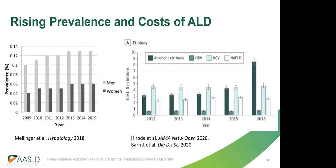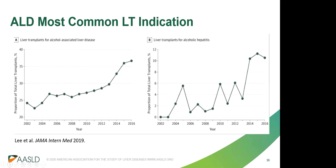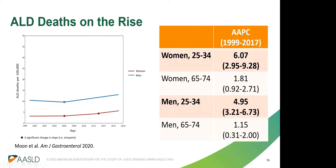National data from UNOS demonstrate a nearly 50% increase in liver transplantation for alcohol-associated liver disease since 2002, with much of this rise due to an increase in transplants for alcohol-related hepatitis. Recent national death certificate data from the U.S. CDC demonstrate that ALD deaths per 100,000 population have been significantly rising from 1999 to 2017, with a statistically significant acceleration among women after 2013. Average annual percentage changes in mortality rates have been most pronounced among individuals aged 25 to 34, with particularly striking increases in young women.